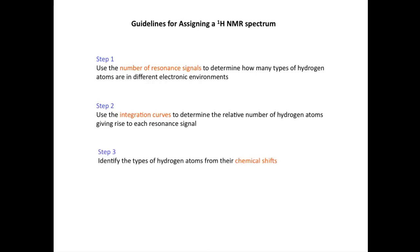In step three, we're identifying the types of hydrogen atoms from their chemical shifts. And in step four, we're going to use the splitting pattern of each signal to work out the number of hydrogen atoms on a carbon atom adjacent to an observed hydrogen atom. So we're going to look at an example in a minute where we're going to apply each of the four steps to identify an unknown compound.